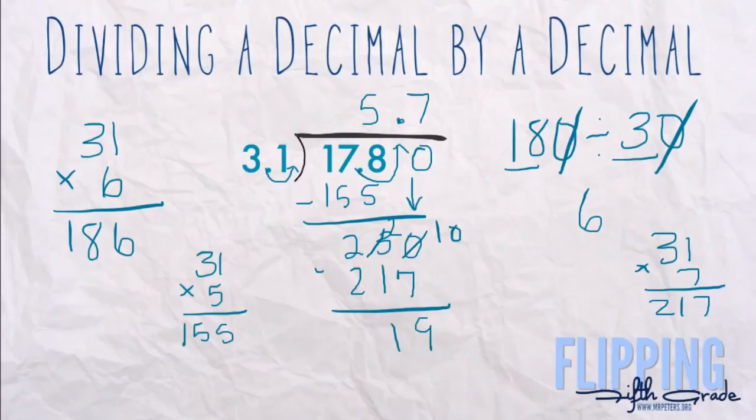And get 19. We can bring down the next zero and really you can just keep going however far the problem needs you to take it. So in this case we'll go one more step and at that point we'll stop.